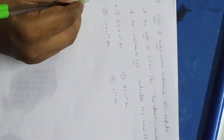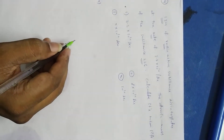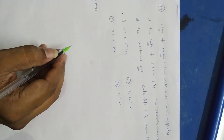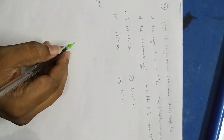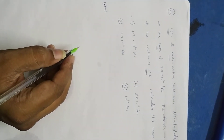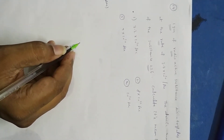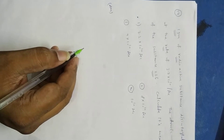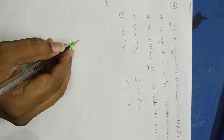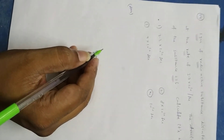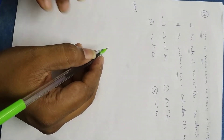Last problem in this assignment. 1 gram of radioactive substance disintegrates at the rate of 3.7 into 10 power 10 per second. The atomic mass of the substance is 226 grams. Calculate its mean life.